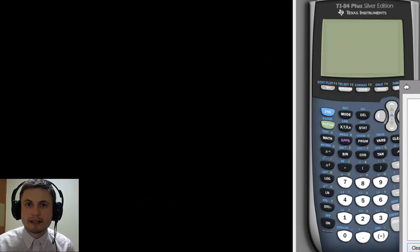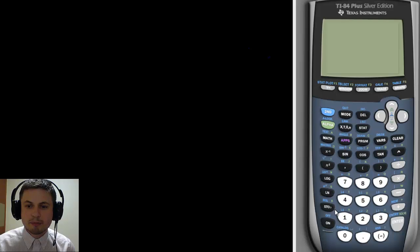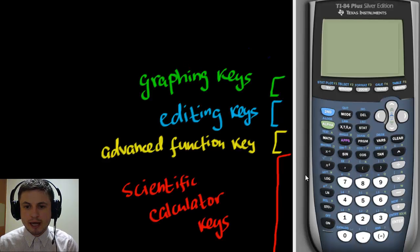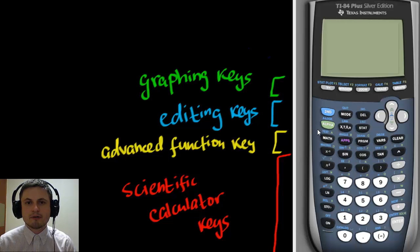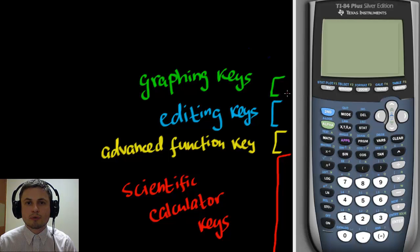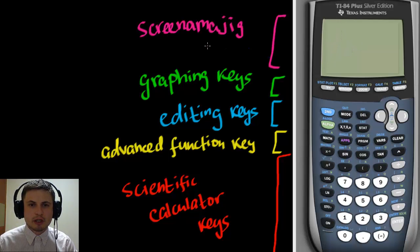Before we start, let's look at the calculator layout. On the bottom right you have all the typical scientific calculator buttons, similar to what you used in middle school. Then on the second level, starting with the math button, you have advanced function keys including sine, cosine, and exponents. You also have editing keys that let you shift between functions. The top row is your graphing keys, and of course the most important part is the display screen.